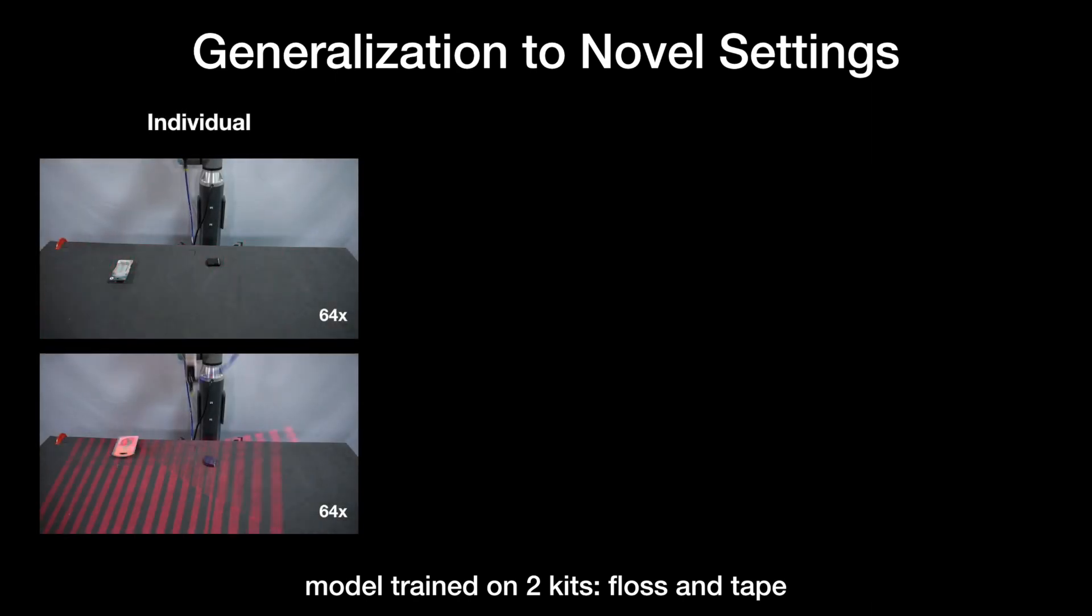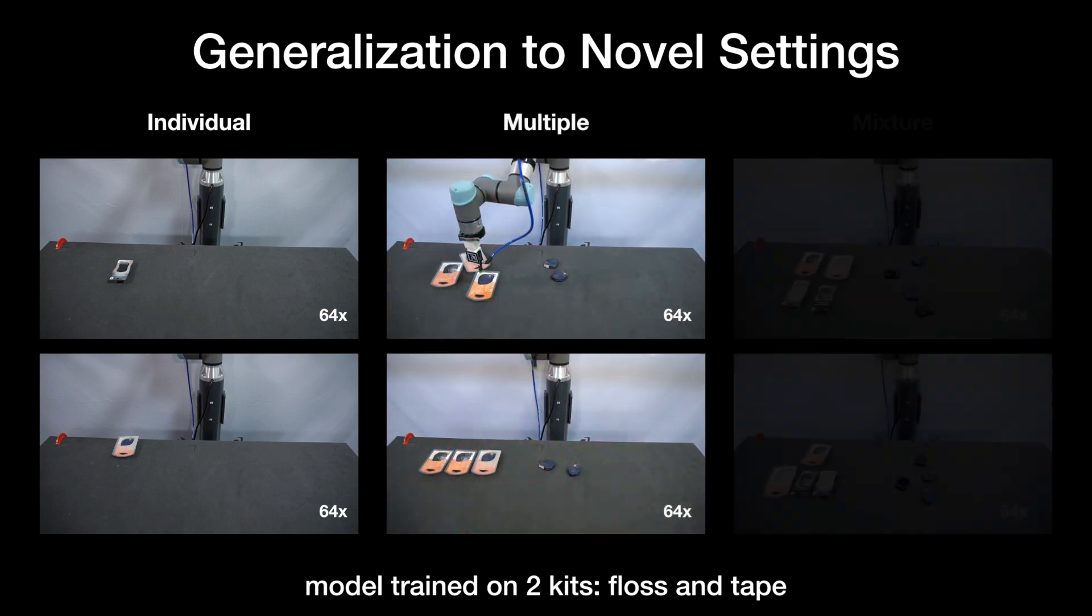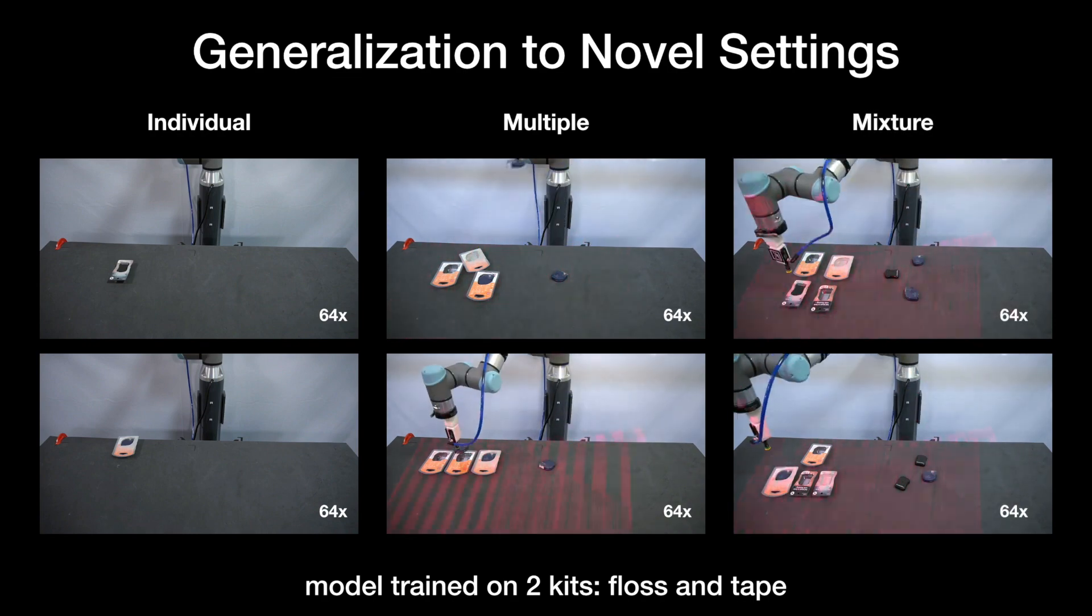Next, we study how well our system can generalize to different kit configurations. Specifically, we select the tape and floss kits and train a model on the same single kit dataset. We perform 20 trials of combinations and mixtures of these kits, never seen during training, and find that our system achieves an assembly success rate that exceeds 94%.